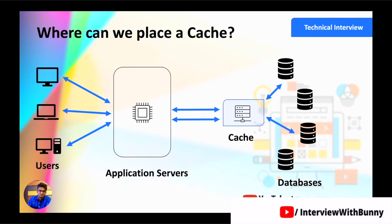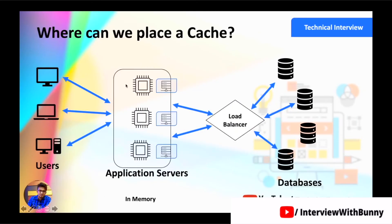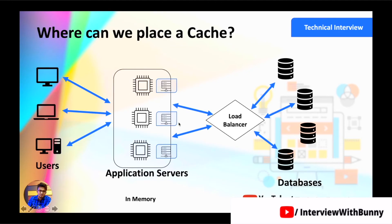Another popular caching approach is in-memory caching, where each server is provided with a local cache next to it. This significantly reduces network costs and increases application performance. However, the problem with this method is that data consistency can be lost. For example, if one process manipulates data on one local cache while another process manipulates the same data on a different cache, there will be a data mismatch between the two servers — and that is the main problem with in-memory caching.